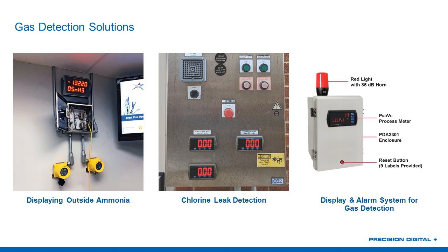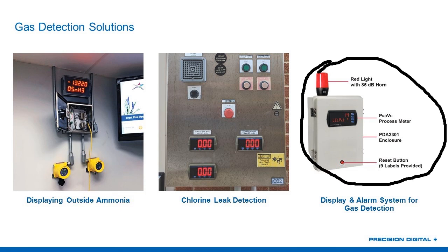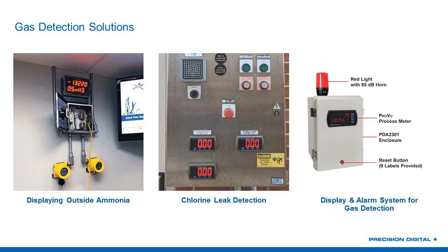The same applies to Trident X2s for chlorine leak detection — you've got to use a nice, big, bright, outdoor-readable display. If you put something there that people can't read, they won't read it, and in a safety application that is a problem. With our new light and horn that can be attached to our NEMA 4X boxes, you've basically got a complete solution: an 85 dB horn, a red strobe light, a ProView process meter for a legible display, and a reset button to manually silence the horn — configurable as latching or non-latching, with a lot of configuration options for how that reset button works.